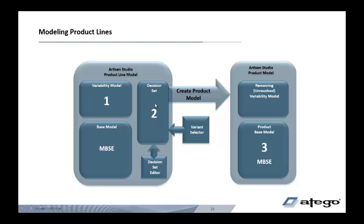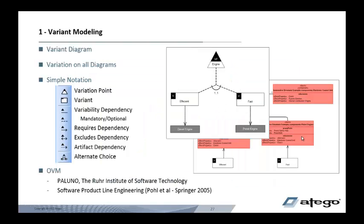Then using all three, we create instance product models, resolving the variation to create a new base model, which we can use to run simulation and trade studies to decide if this is a good product. Let's start with variability modelling. Otago Modeler provides OVM — orthogonal variability modelling — which is very simple. It provides two boxes: one for variation points and one for variants, and a collection of dependencies to link them together and link them with base model items.